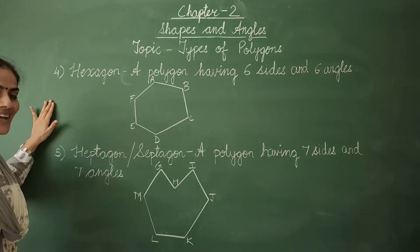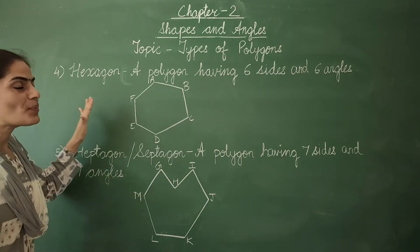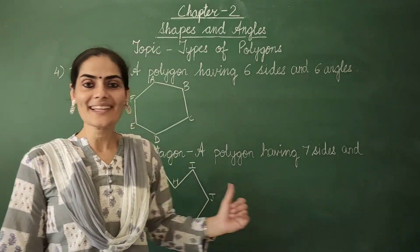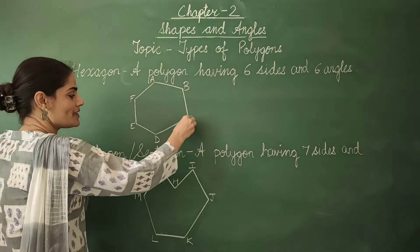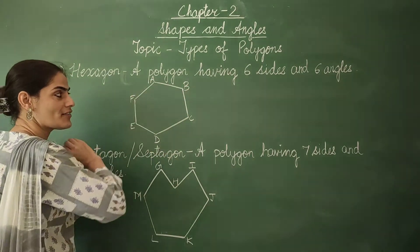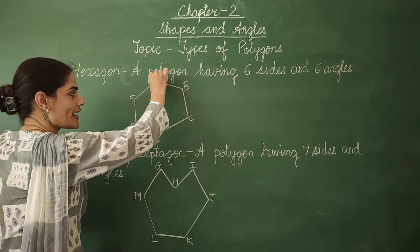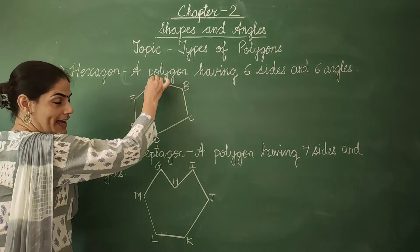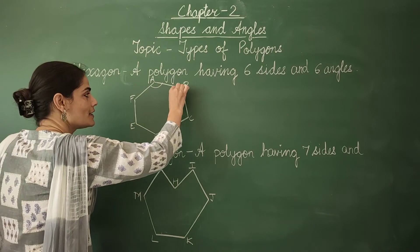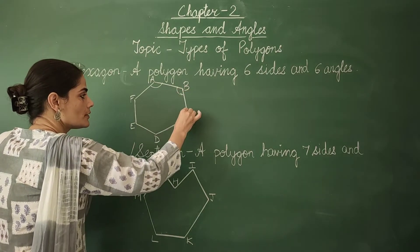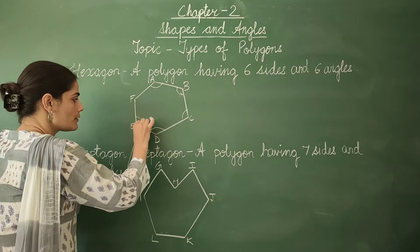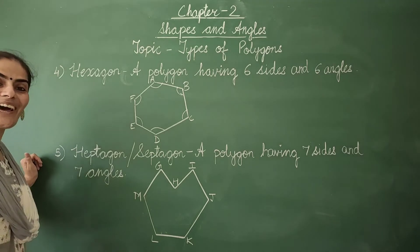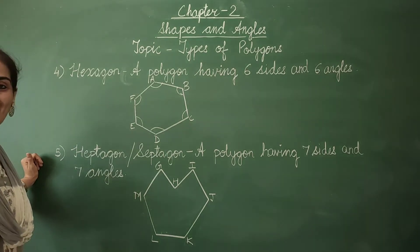A polygon having six sides and six angles is called a hexagon. Look at this figure A, B, C, D, E, F — it has six sides and six angles. So a hexagon is a polygon having six sides and six angles.